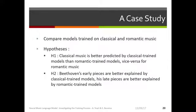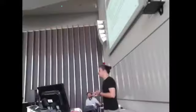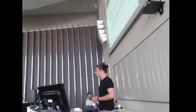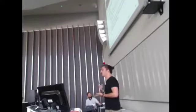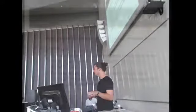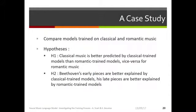So now I'm going to show a case study where I compare classically trained models and romantically trained models. So I made two hypotheses. The first one is that classical music is better explained by classically trained models than romantic trained models, and vice versa for romantic music. The second hypothesis concerns Beethoven's music. So Beethoven was not included either in the classic trained set or the romantic trained set. So I want to see if his work is better explained by romantic music or classical music, and in particular if his early pieces are more classical and his late pieces are more romantic.